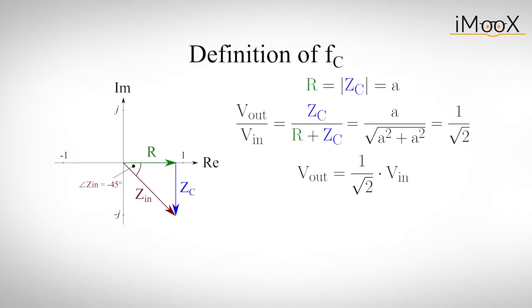Actually, the definition of the corner frequency comes from the input and output power of the circuit. Since the amplitude of the output voltage at this point is 1 over the square root of 2 times the input voltage, the output power, which is proportional to the square of the output voltage, is exactly half of the input power. Makes sense, doesn't it?